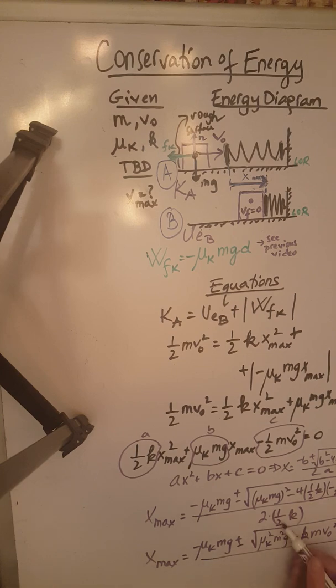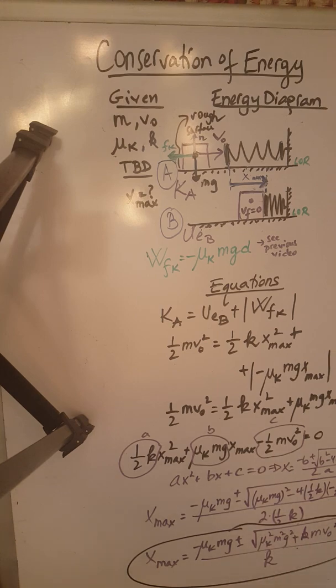And all over, the 2 and the 2 cancel out here, so we have K in the bottom. So this is the expression that gives us the maximum compression of the spring.